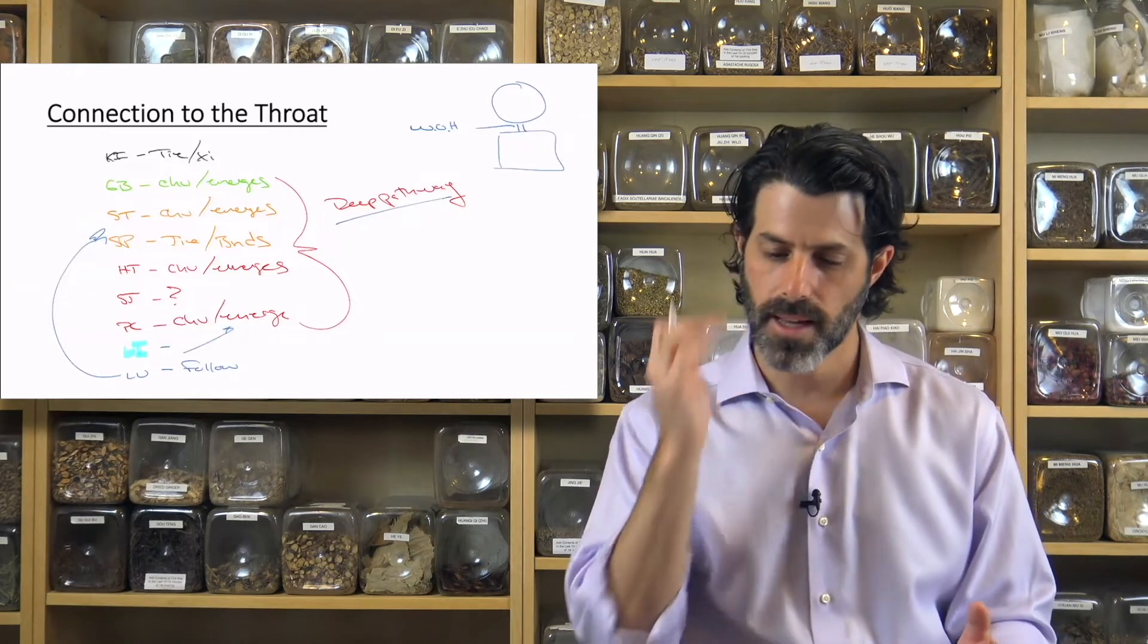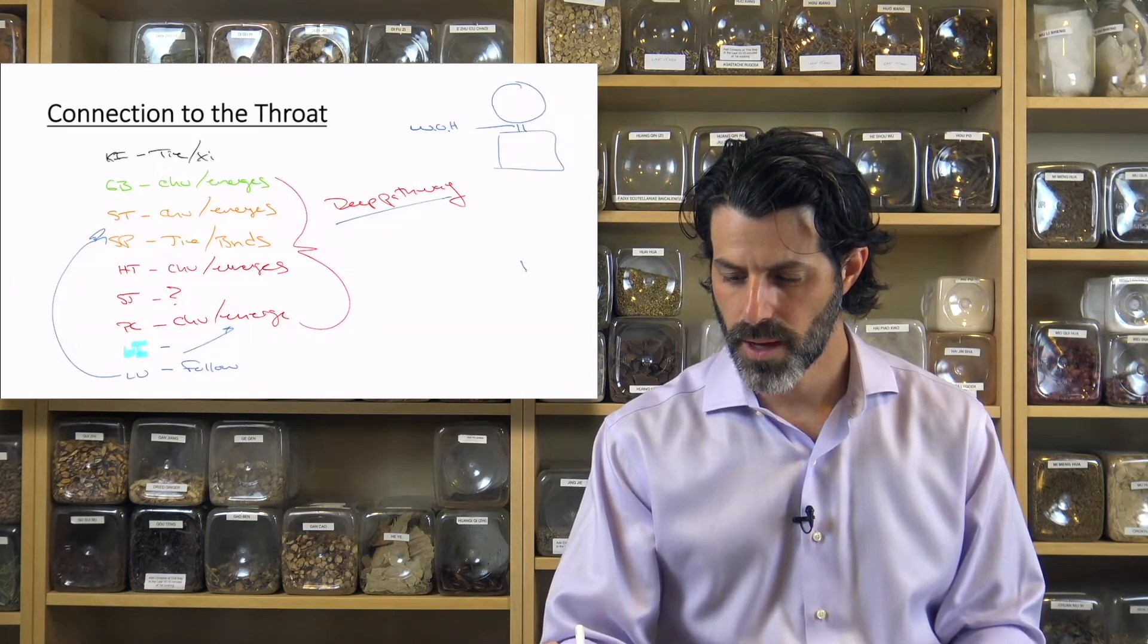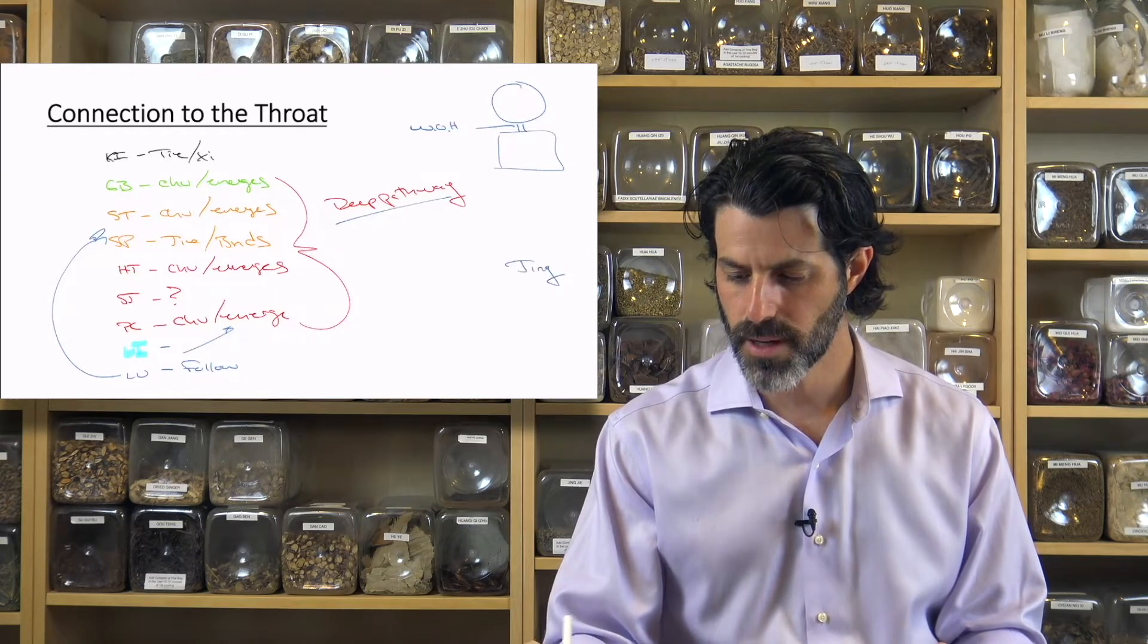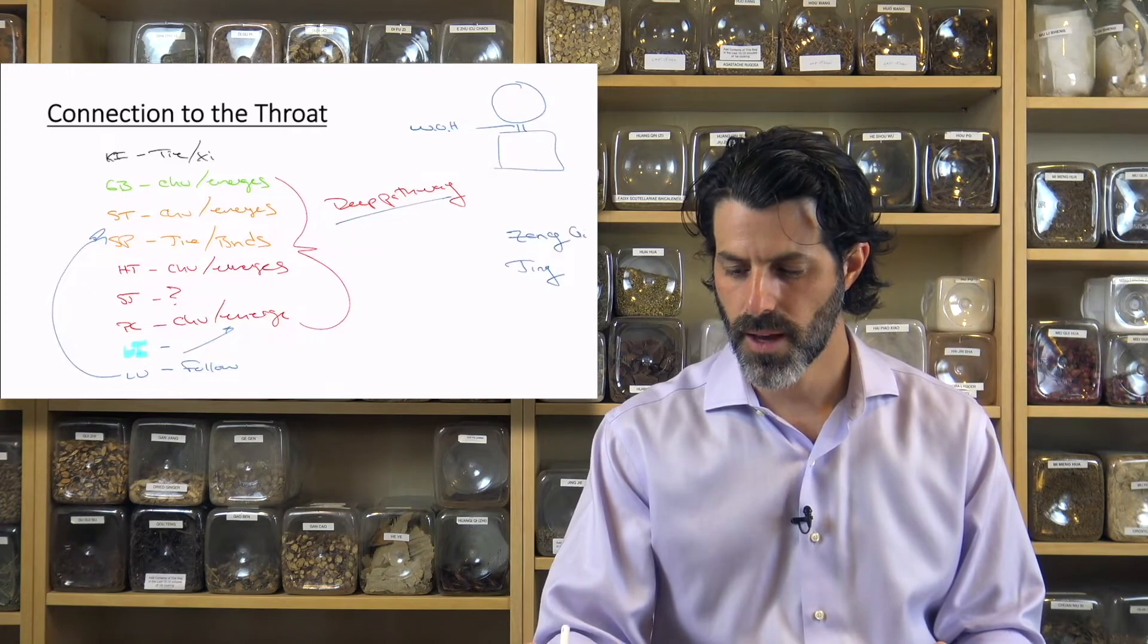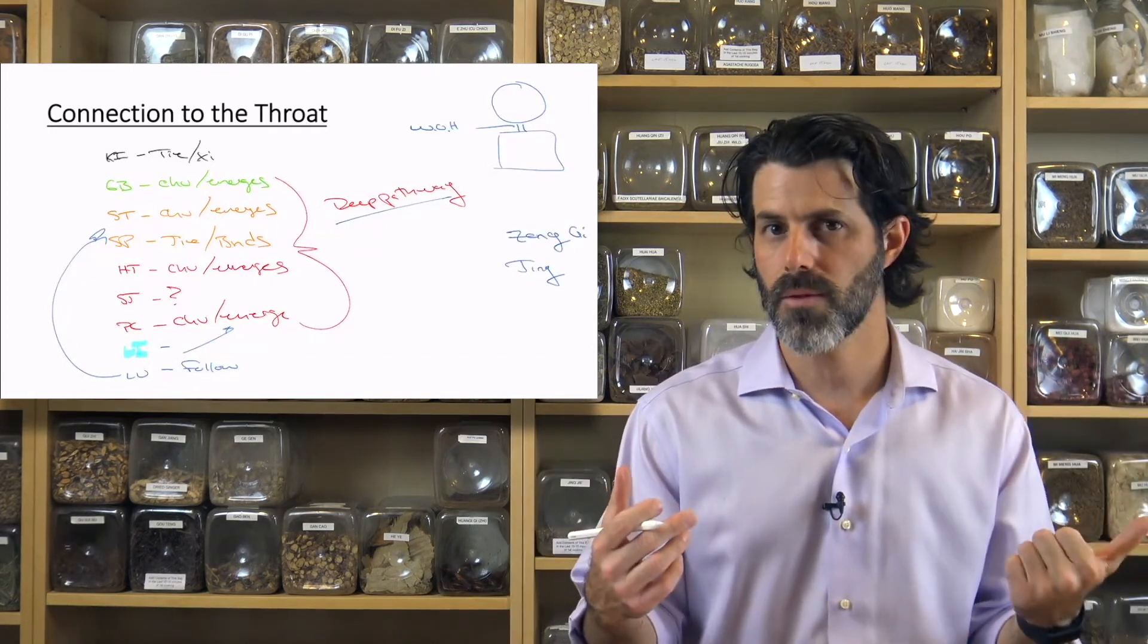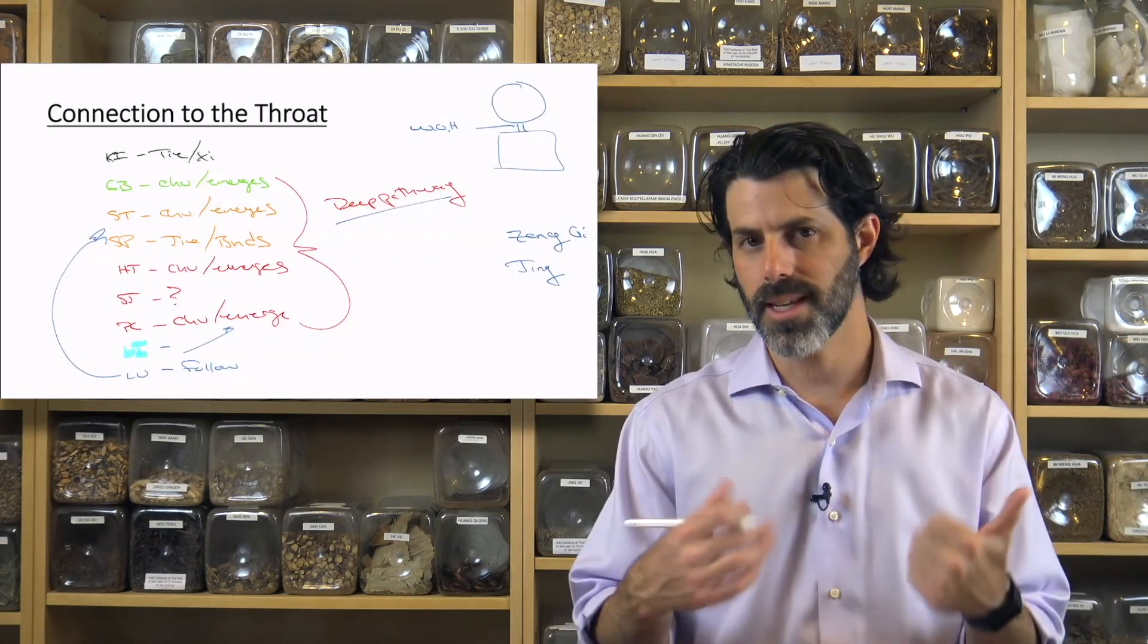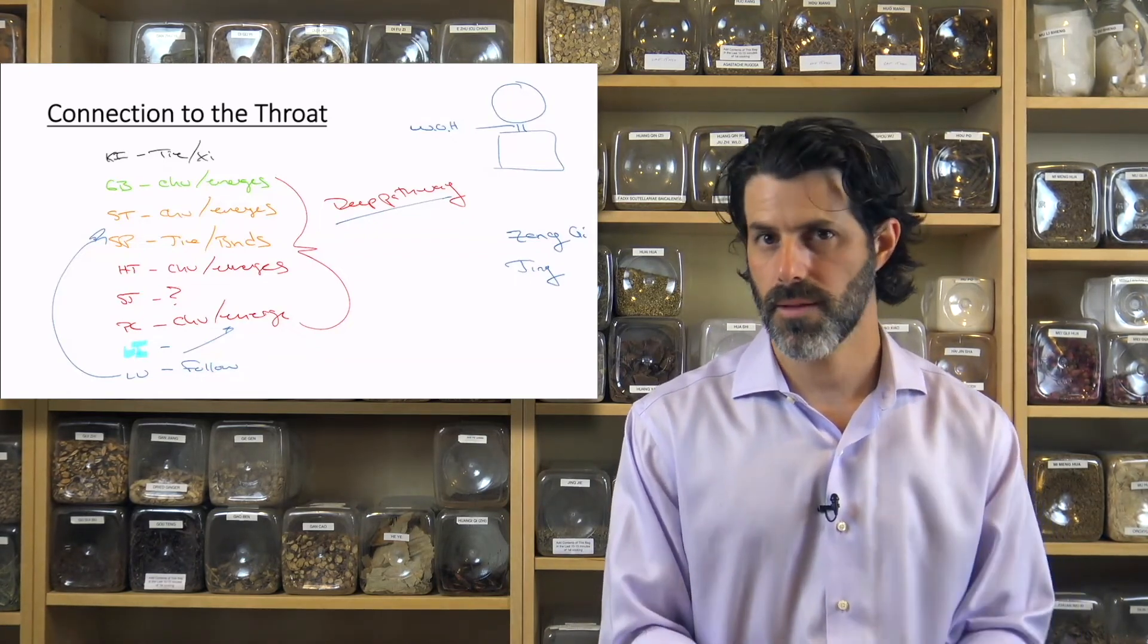Another thing that's really important part of this discernment is this idea that divergent channels are dealing with both Jing-level transmission as well as Zhongqi-level transmission. So they are dealing with ambient epigenetic transmissions, as well as deep Jing-level genetic transmissions, and the throat is a significant part of that.